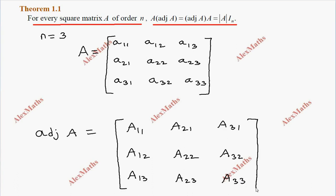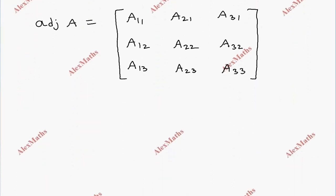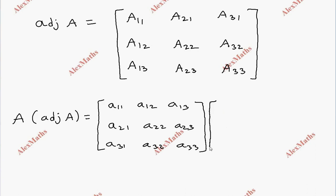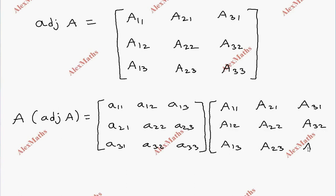For the first part, we compute A into adjoint A. Matrix A is written as a₁₁, a₁₂, a₁₃; a₂₁, a₂₂, a₂₃; a₃₁, a₃₂, a₃₃. And adjoint A is written with capital cofactors A₁₁, A₁₂, A₁₃; A₂₁, A₂₂, A₂₃; A₃₁, A₃₂, A₃₃ multiplied together.